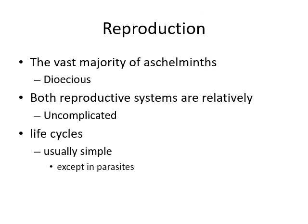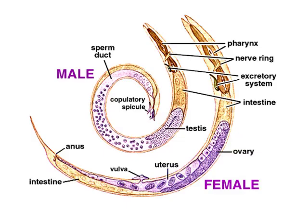Reproduction: the vast majority of Aschelminthes are dioecious — male and female separate. Both reproductive systems are relatively uncomplicated. Life cycles are usually simple, but in parasites they will be complex. In the male you can see the sperm duct and the copulatory spicule that will transfer sperm to the female. The female has pharynx, excretory system, intestine, ovary, uterus, vulva, and anus.